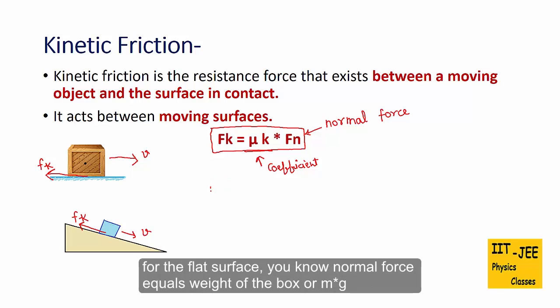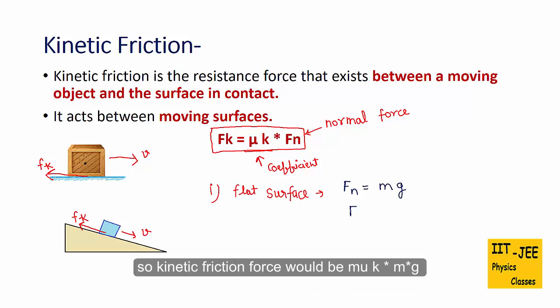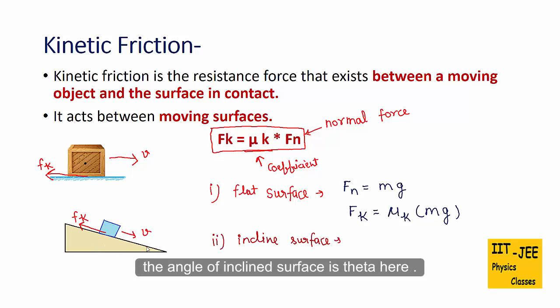For the flat surface you know normal force equals weight of the box or m times g. So kinetic friction force would be μk times mg. And for the inclined surface like this one the angle of inclined surface is theta here.